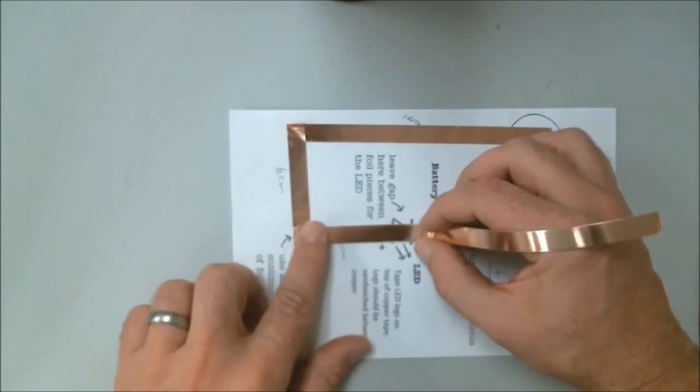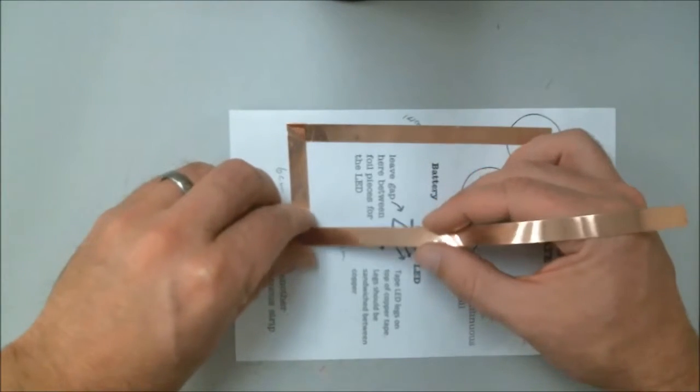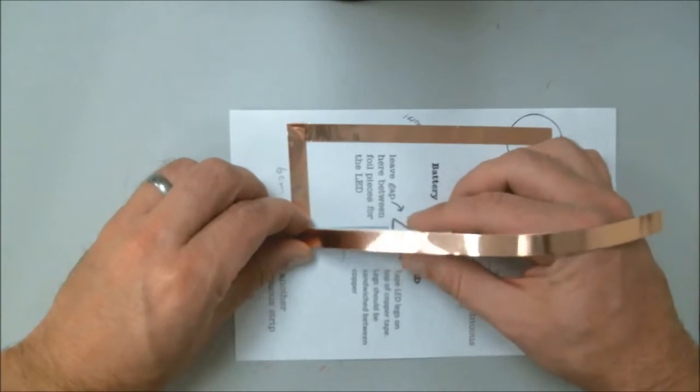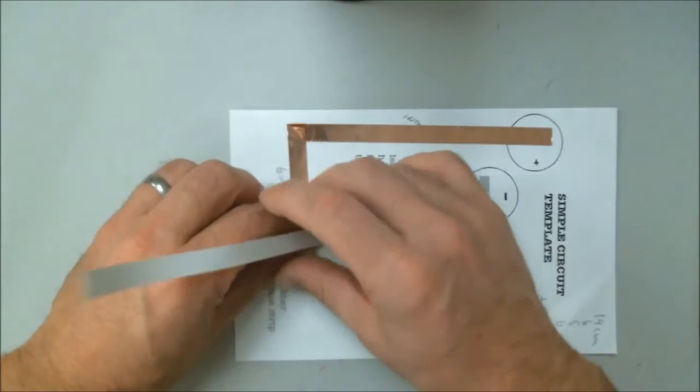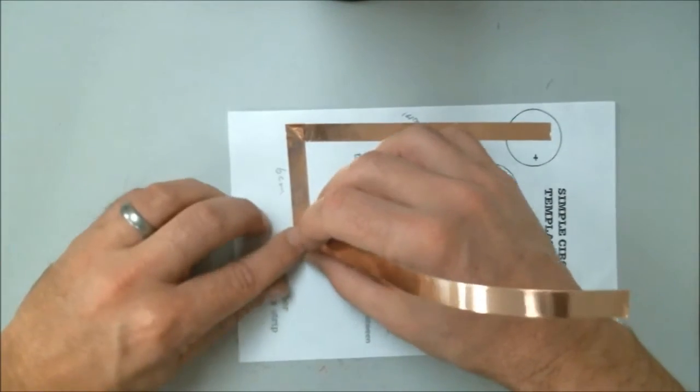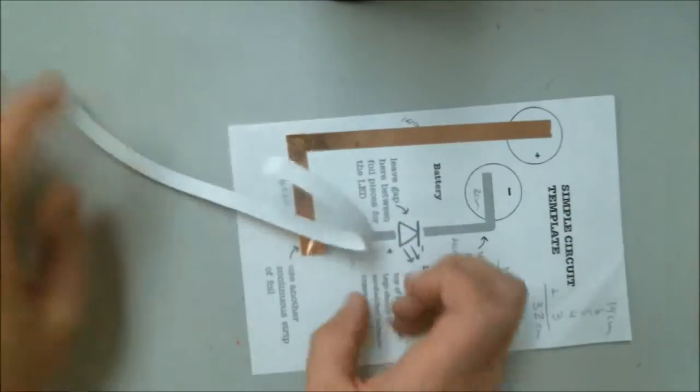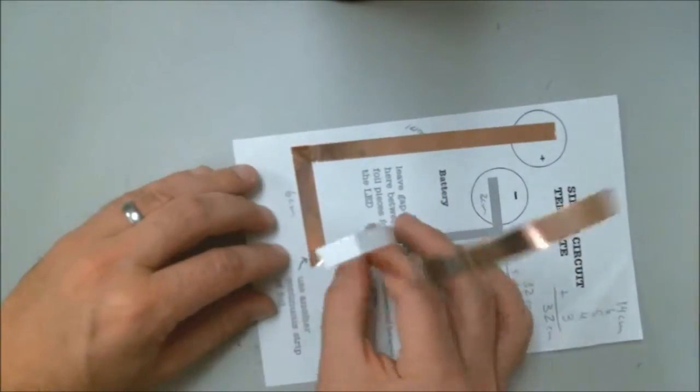Now I'm going to line that up a little bit better and crease it. I'm going to hold the sides of the copper tape and pull the paper out from underneath, and gently press that down as I go.